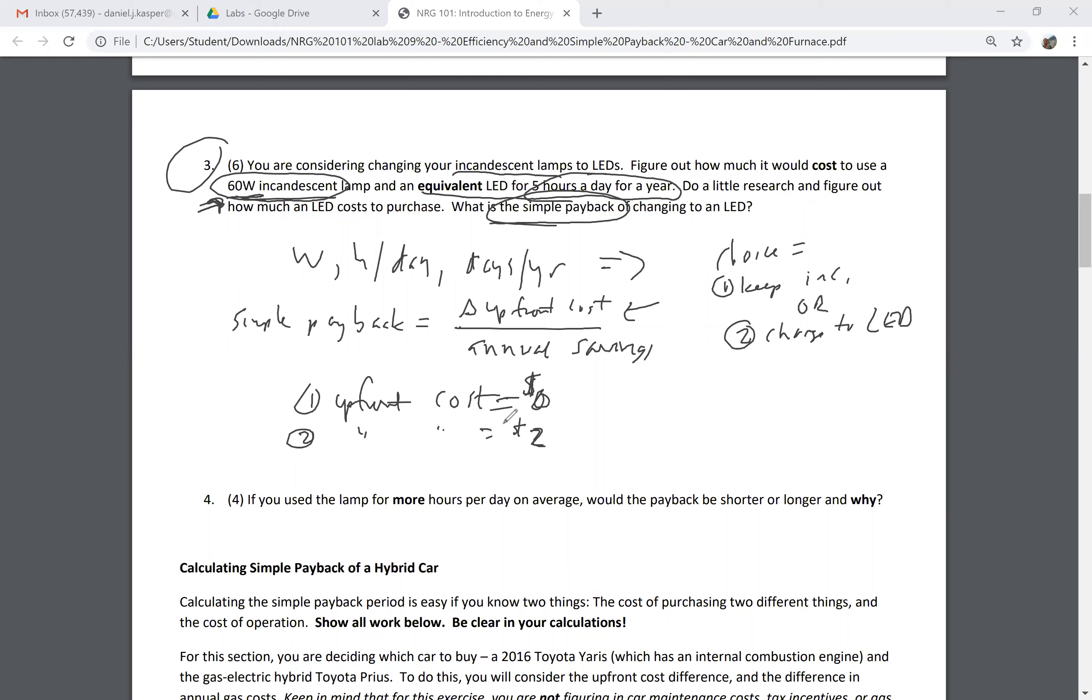My upfront cost difference is two dollars minus zero dollars, so it's going to be two dollars. So that's my upfront cost difference. I apologize for the writing, I'm writing on a very small screen here.